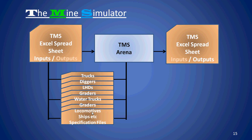Each truck, digger, and LHD has a specification file for that particular type of equipment. In the spreadsheet you just click on a pull-down menu that shows all the different types of trucks or specification files available, and you select whichever trucks you want. You can have mixed fleets — that's generally how TMS works: reasonably simple but does a lot.